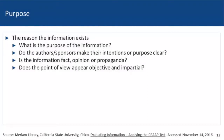Lastly, consider the purpose of the article. Why was it written? Is it to inform, teach, sell, entertain, or persuade? Do the authors or sponsors make their intentions or purpose clear? What goals did the author wish to accomplish? Does the author or publisher consider both sides of an argument or idea, or is there bias towards one viewpoint? Ask yourself whether the point of view appears objective and impartial.